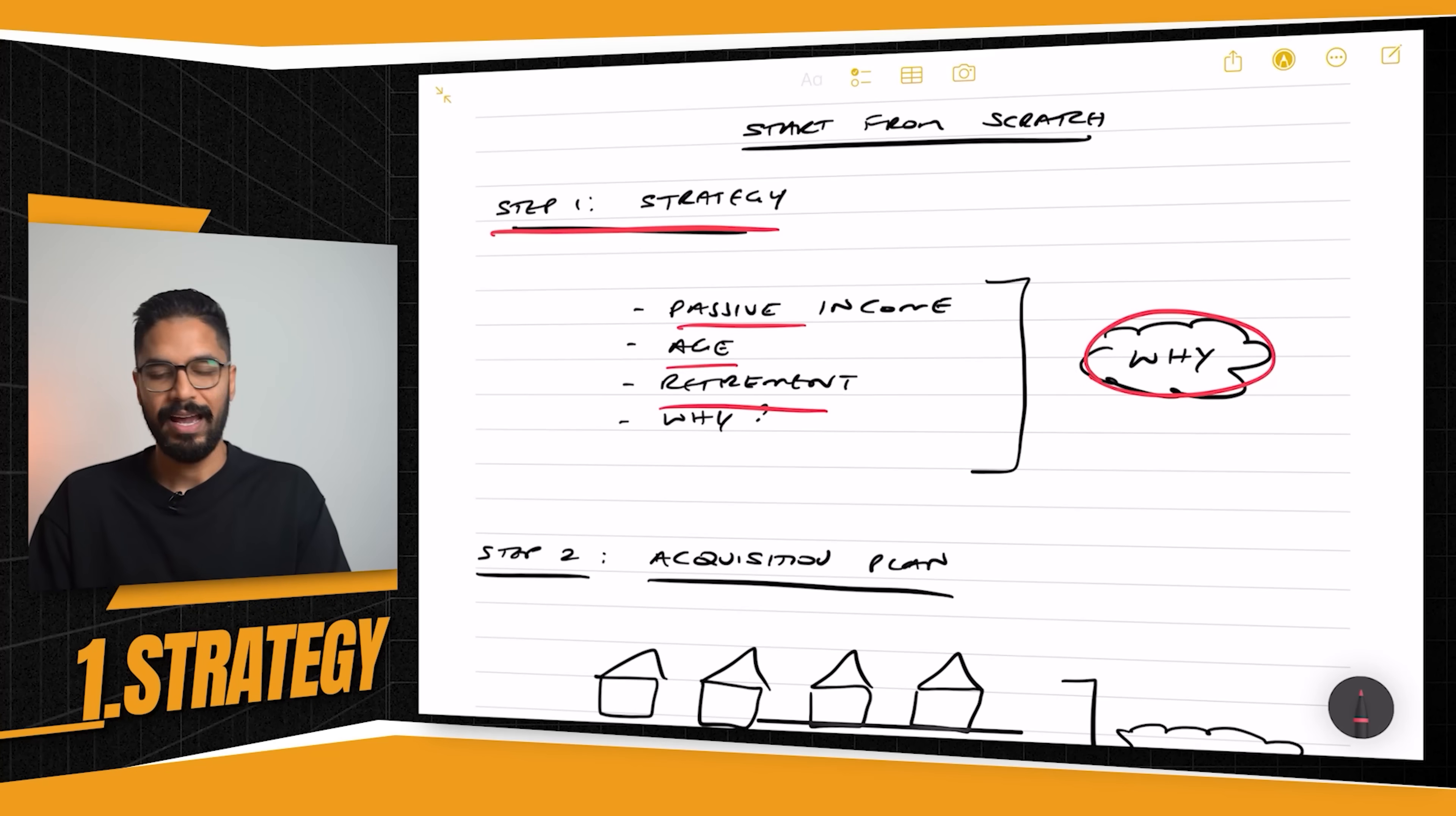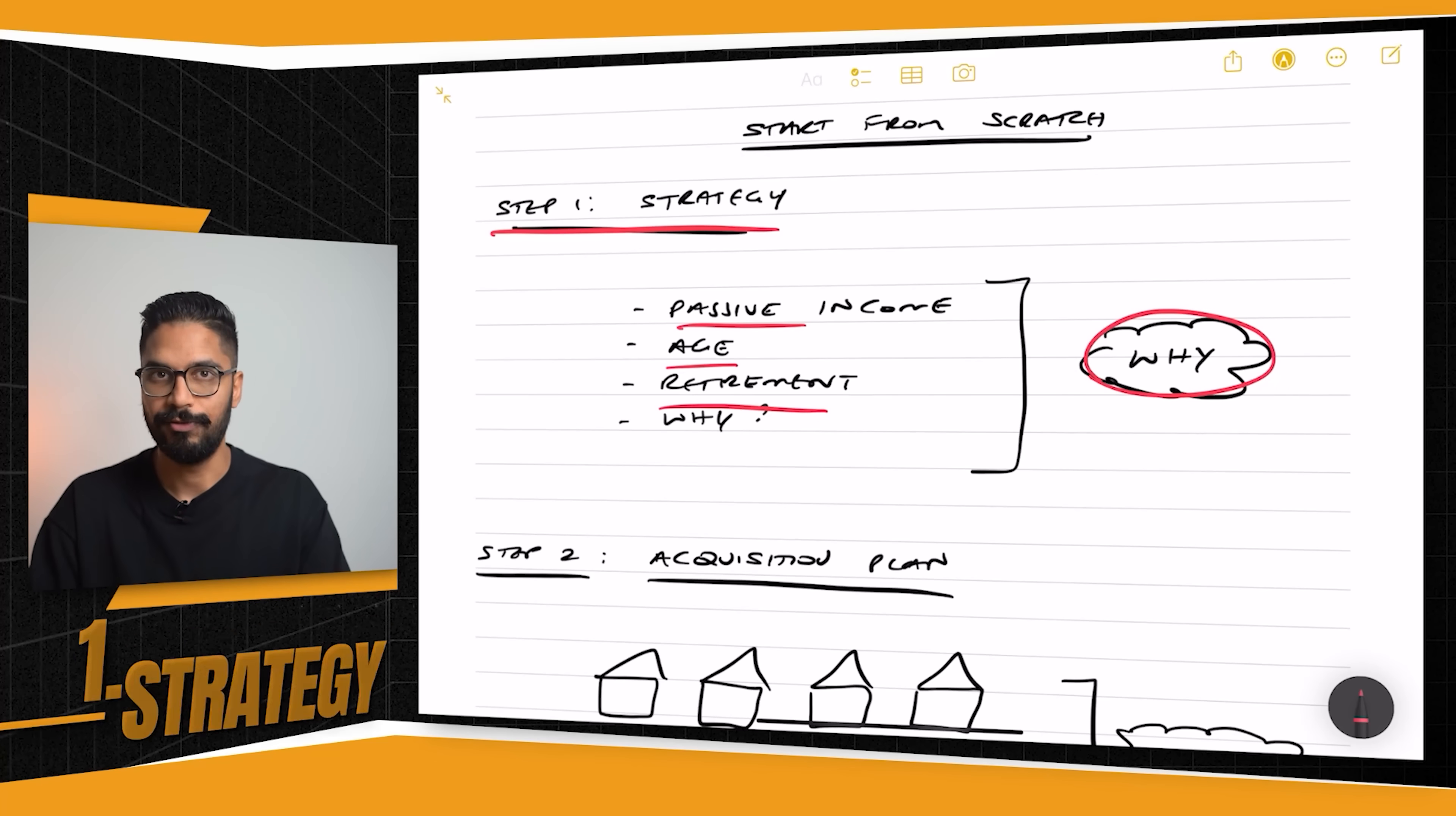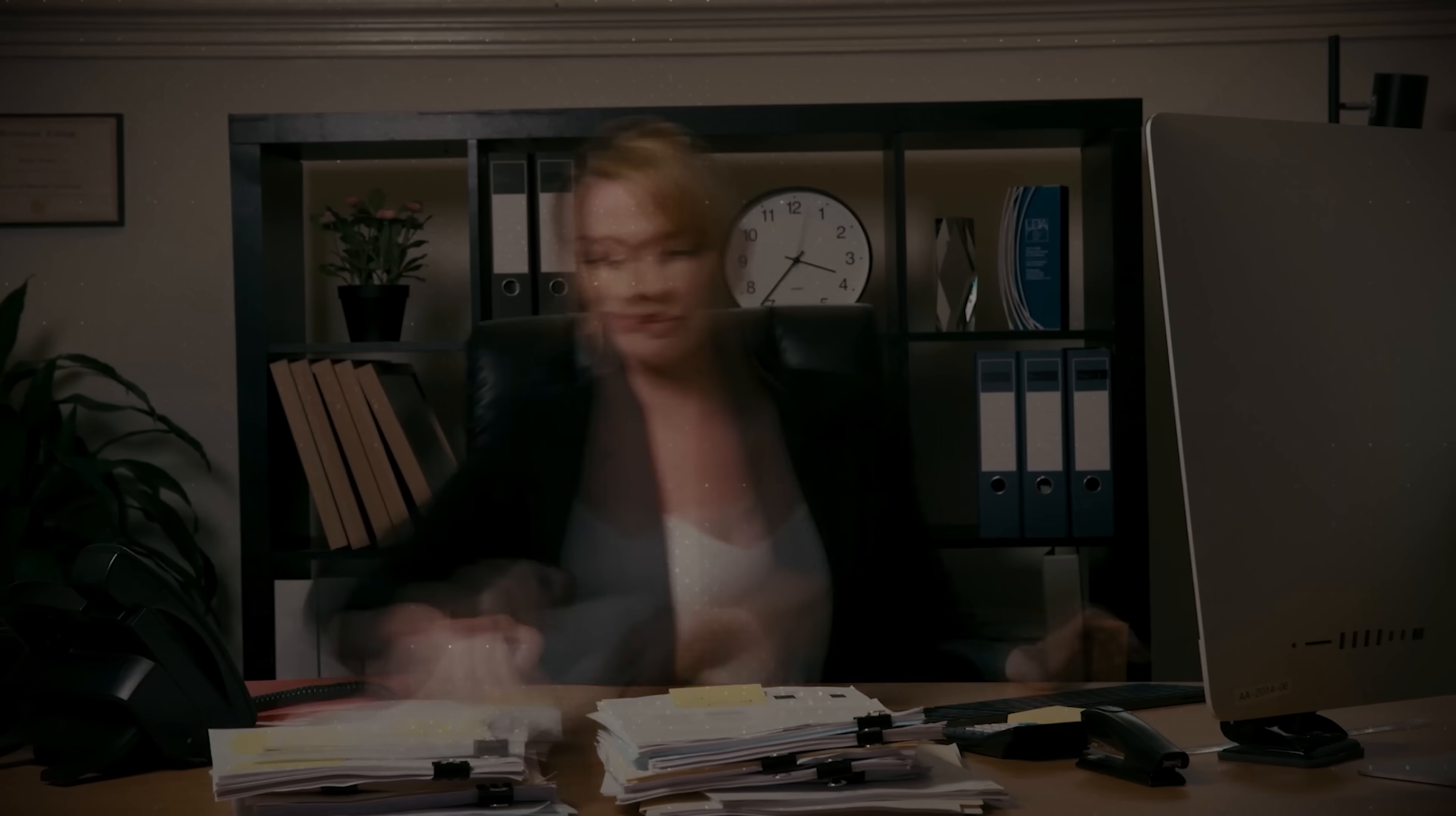Or is it that you don't want to compromise on lifestyle in your early twenties, thirties, and forties, and you're okay working till 65, but you want to ensure that by the time you get to 60 or 65, that you are fully self-funded.